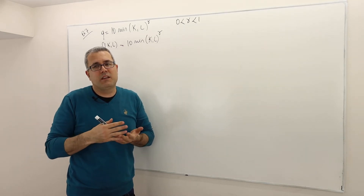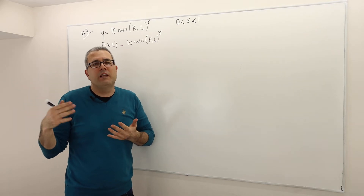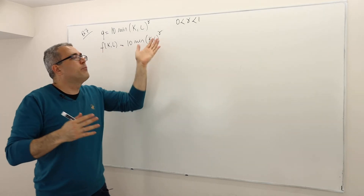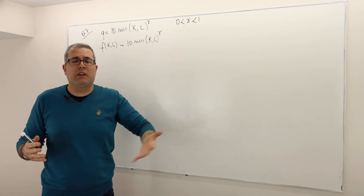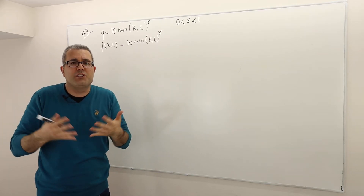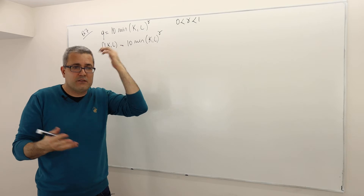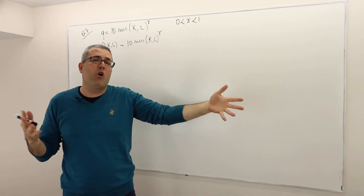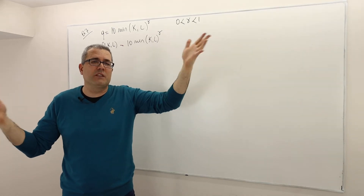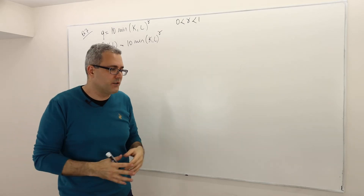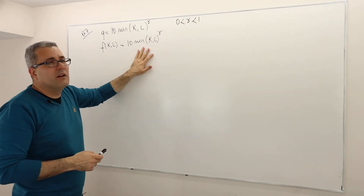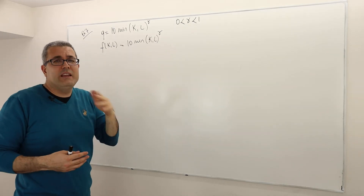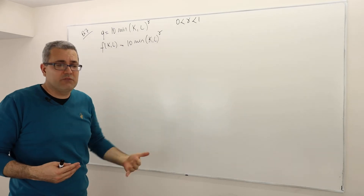That means the optimal number of outputs I should choose is essentially infinite, because the more input I use, even more output I can produce, and it gets cheaper and cheaper. So the profit maximization problem will have no optimal solution, because choosing Q as large as possible is always a good strategy.